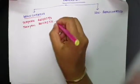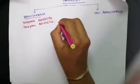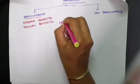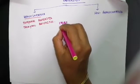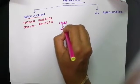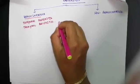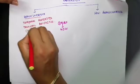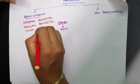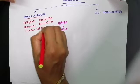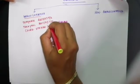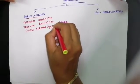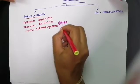Using the 'child becomes wife' mnemonic again, among the small vessel vasculitides, C from child stands for Churg-Strauss syndrome and W from wife stands for Wegener's granulomatosis — both of these are also granulomatous vasculitides.